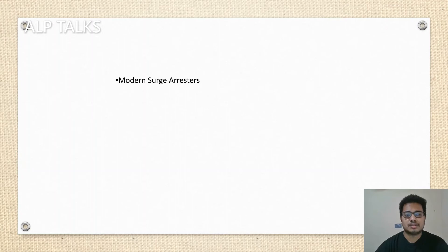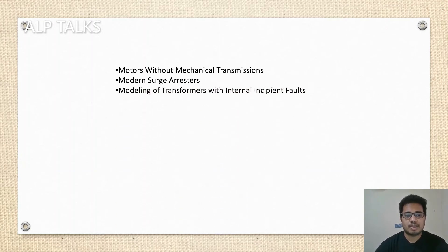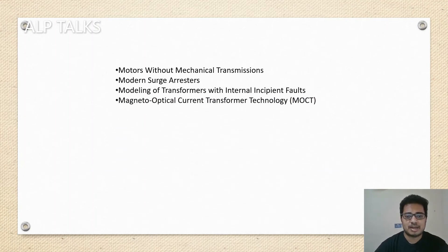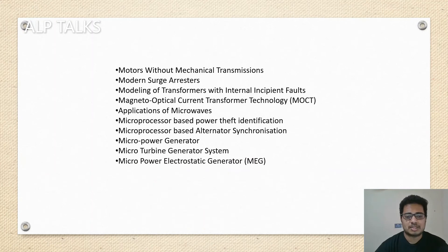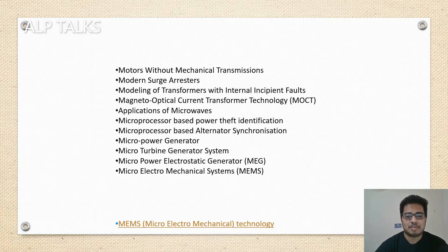Modern surge arrestors, modern motors with mechanical transmissions, modeling of transformers with internal MCVN pulse, magneto-optical current transformer technology, application of microwave, microprocessor based power theft identification, microprocessor based alternator synchronization, micropower generator, microturbine generation system, micropower electrostatic generator — MEG, microelectromechanical systems — MEMS, and microelectromechanical technology.